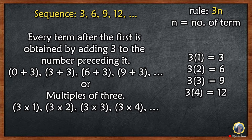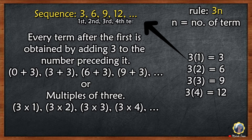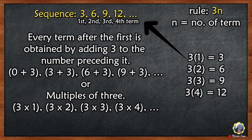Change the value of n into 1, 2, 3, or 4 — the first, second, third, and fourth term. So 3 times 1 is 3, 3 times 2 is 6, 3 times 3 is 9, 3 times 4 is 12.